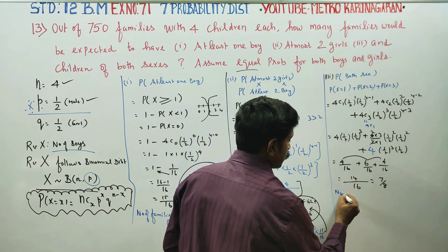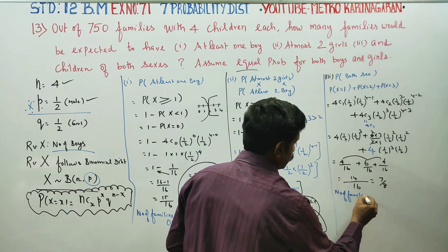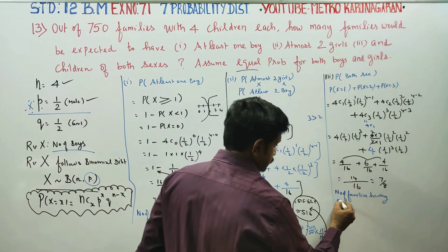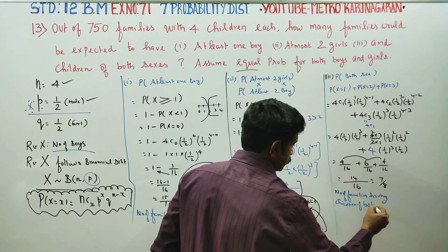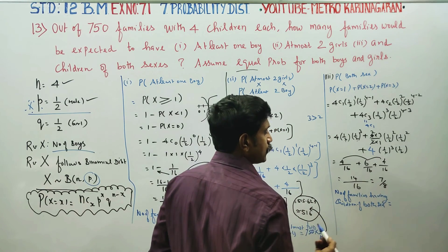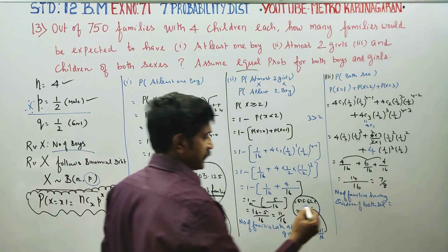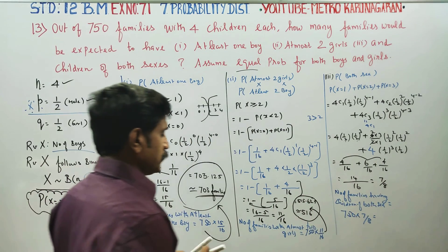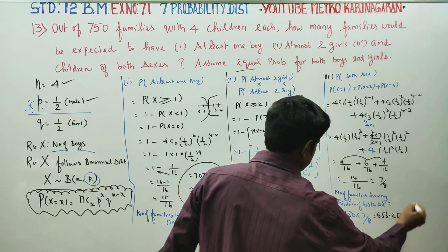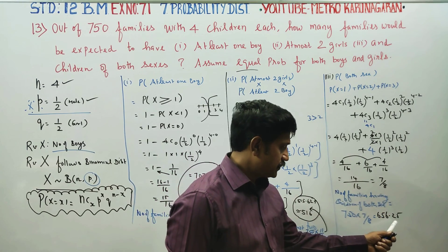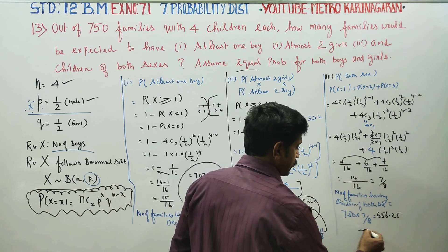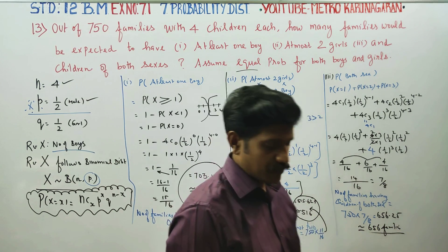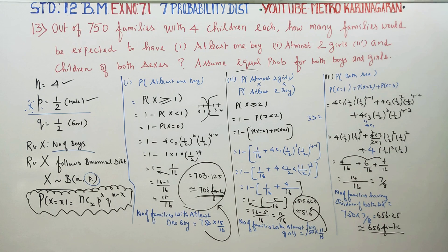Number of families having children of both sexes equals 750 × 7/8 = 656.25, which rounds off to approximately 656 families. Thank you.